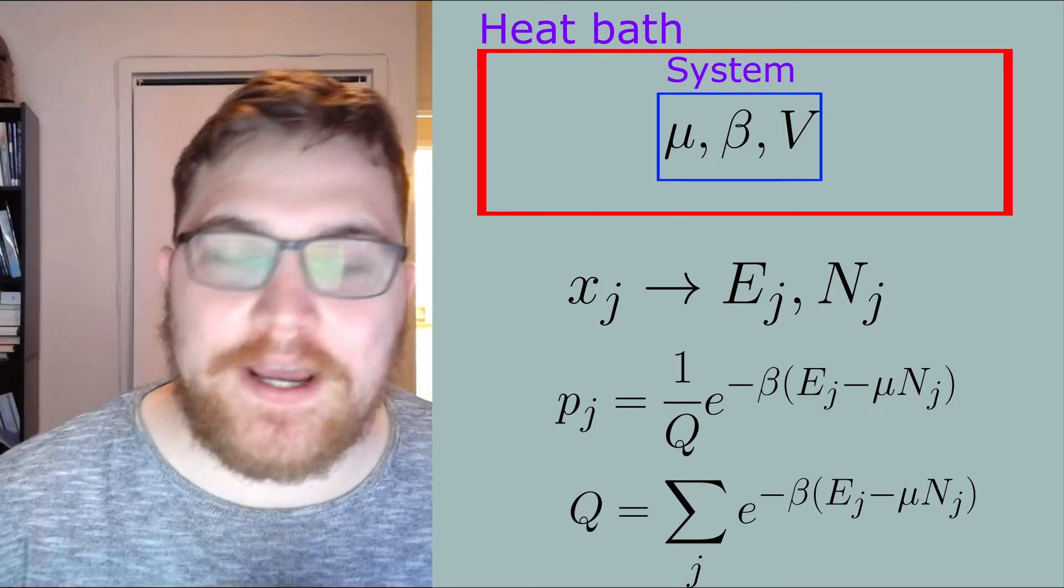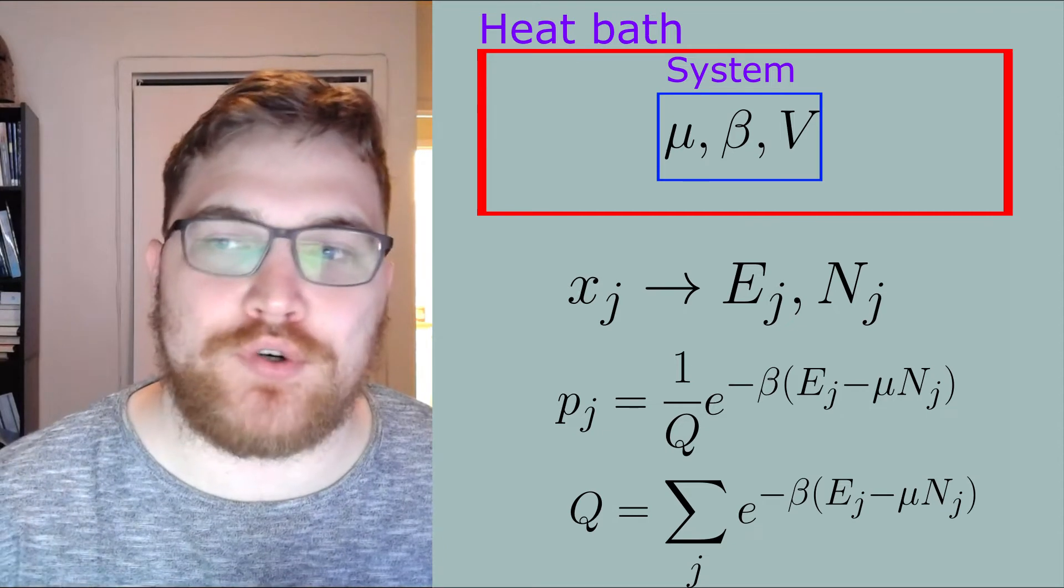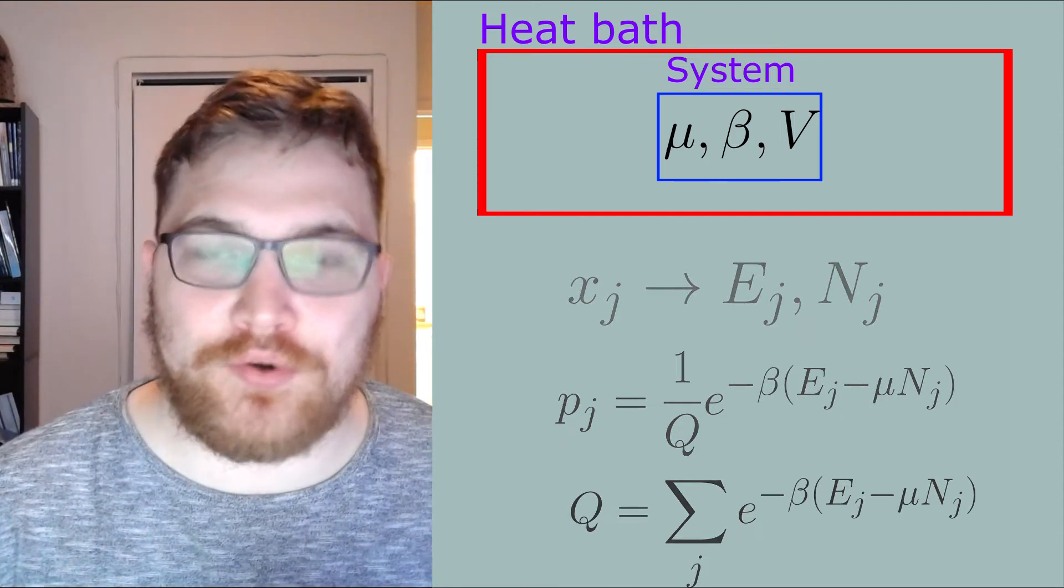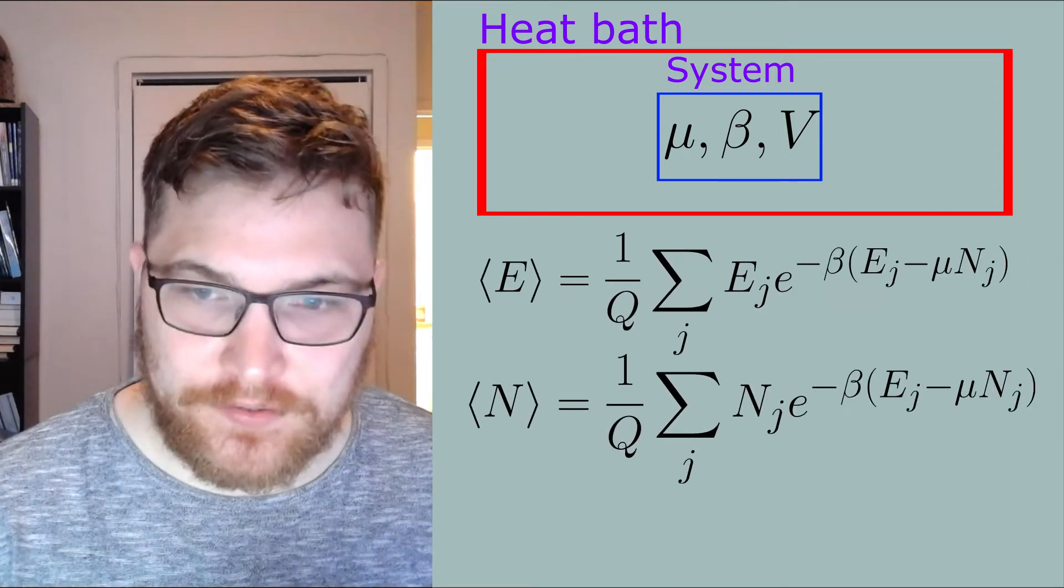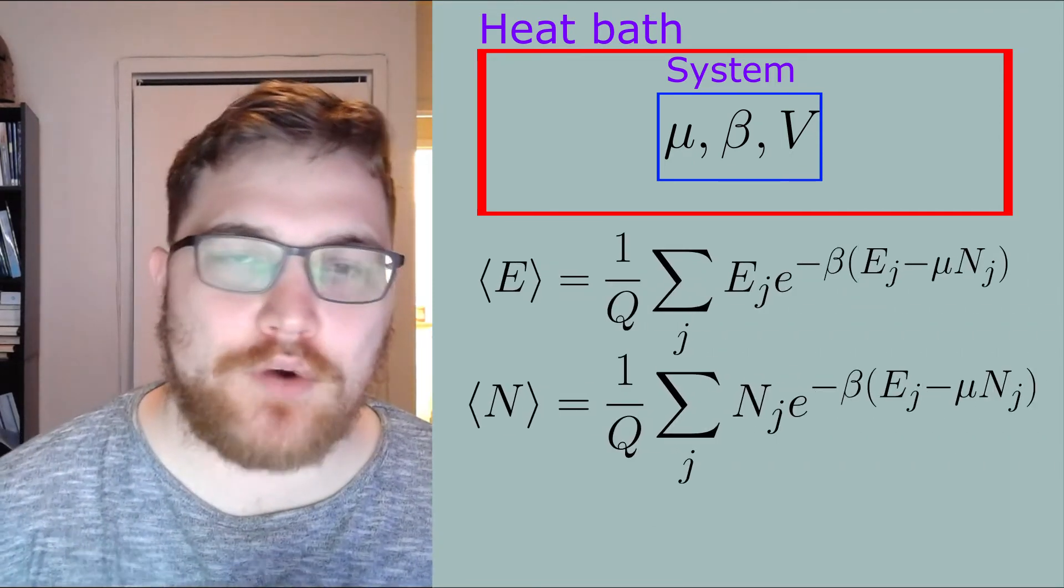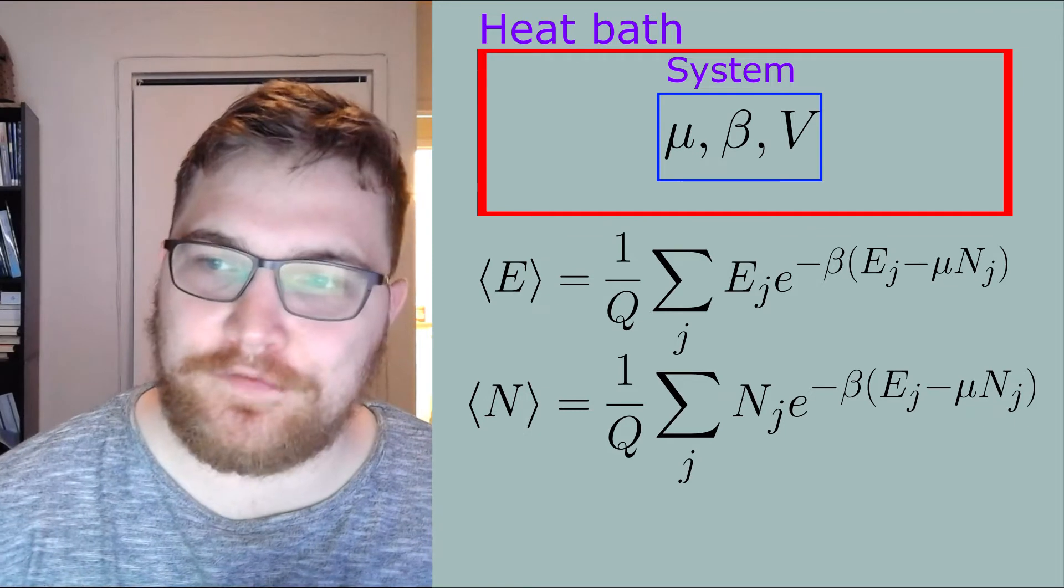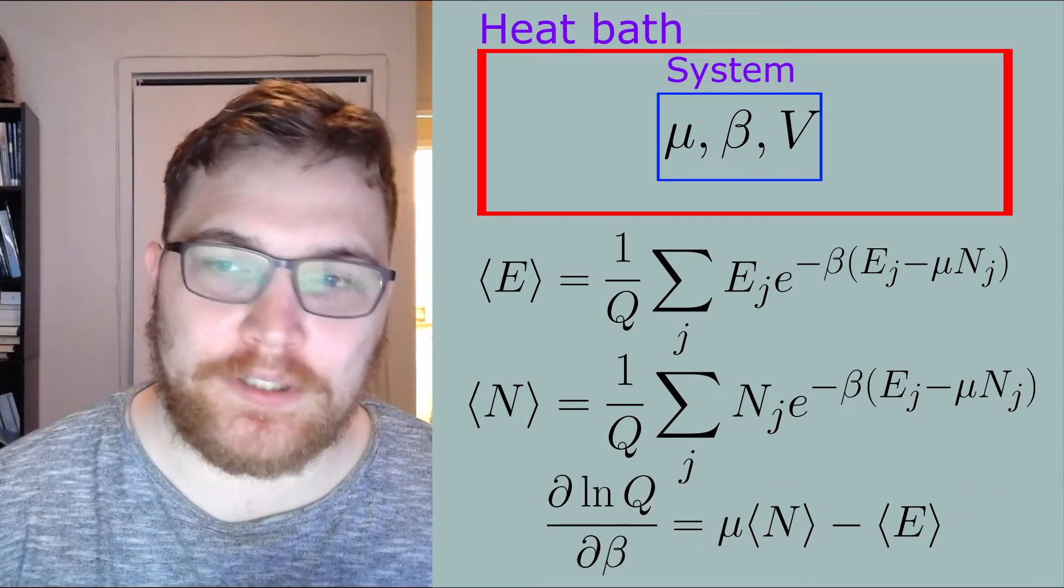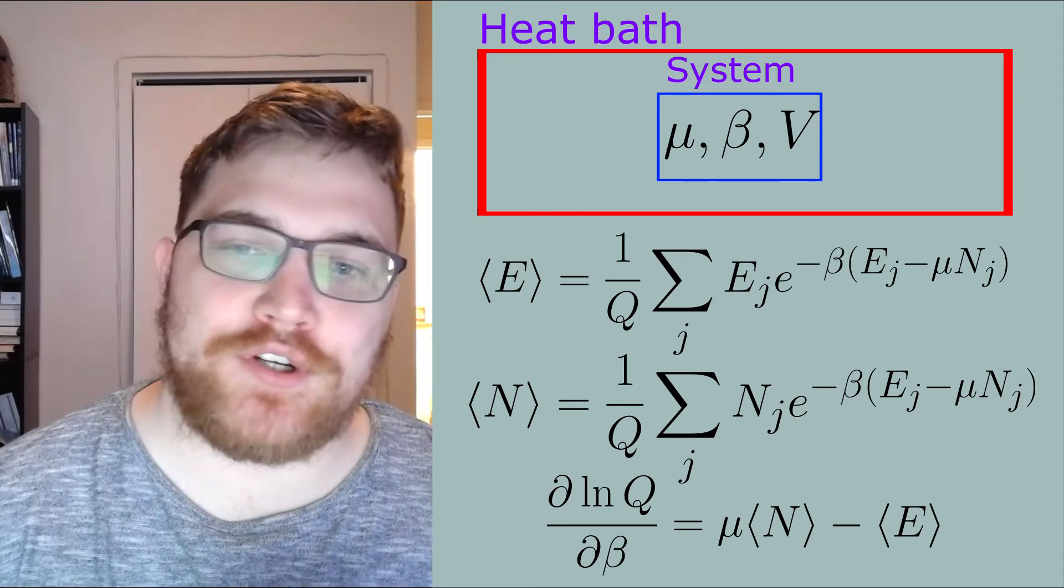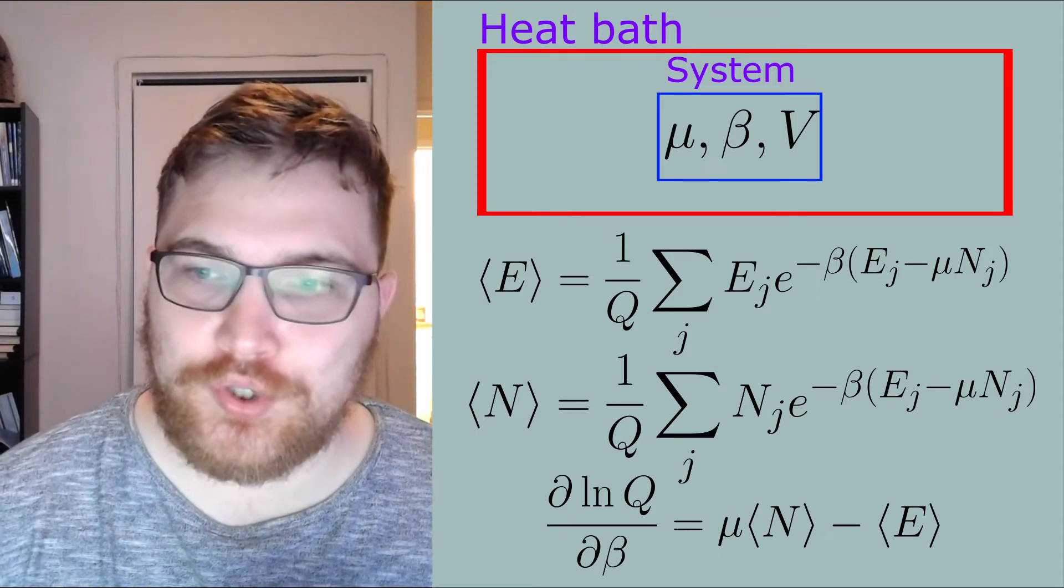We can of course write out our expectation value for the energy and the number of particles in terms of these probability distributions. If we take the natural logarithm of the grand partition function and the derivative with respect to the inverse temperature, we find the following expression.